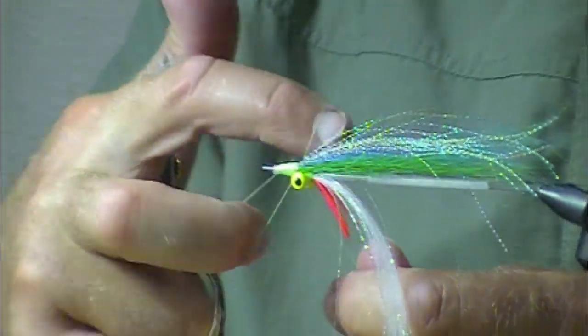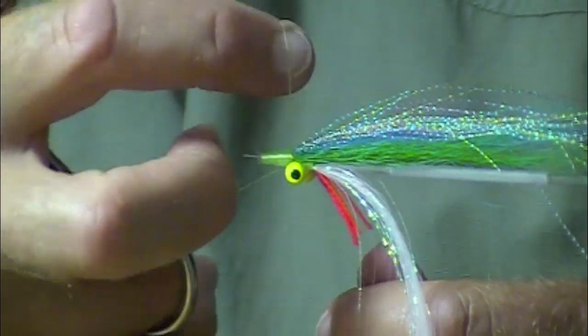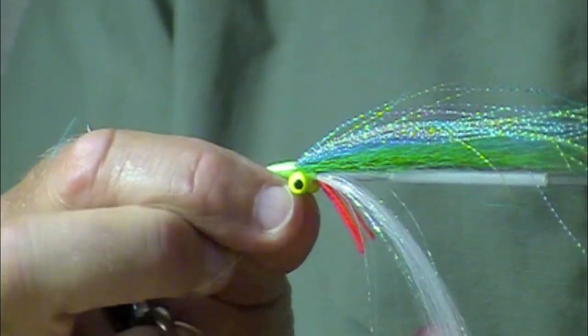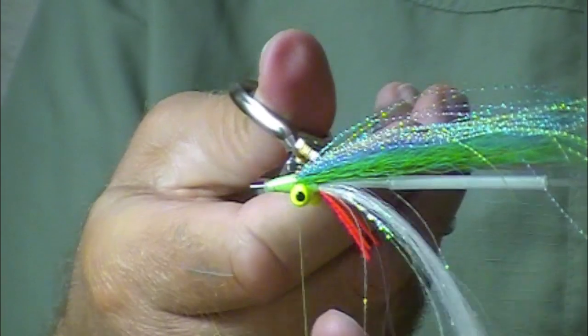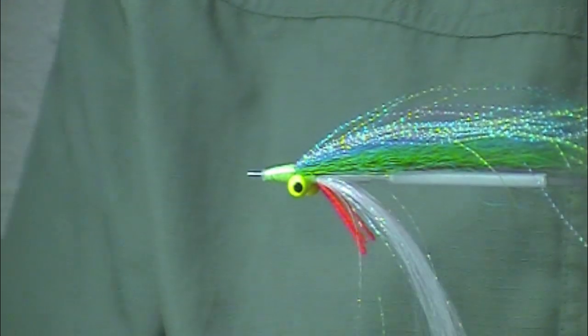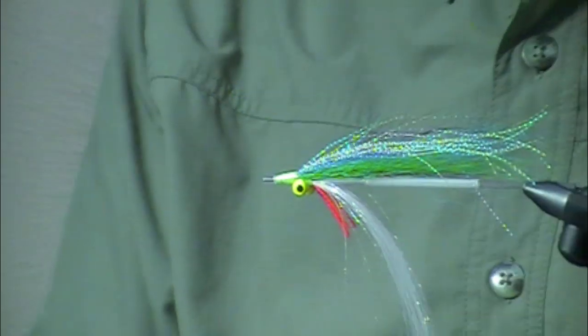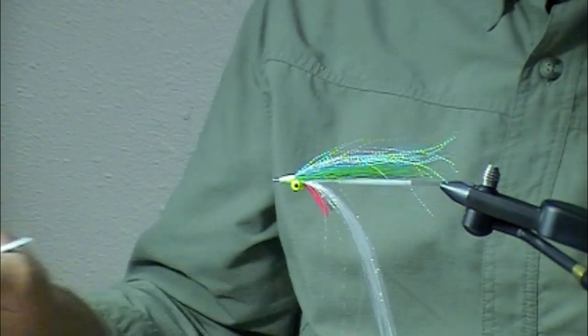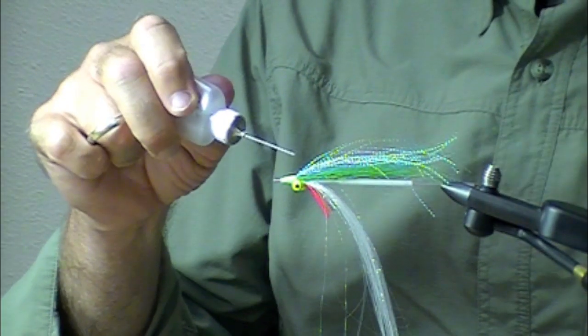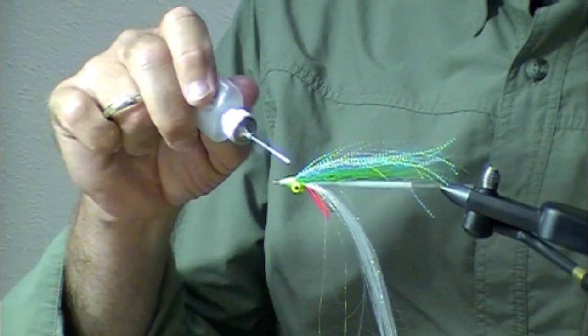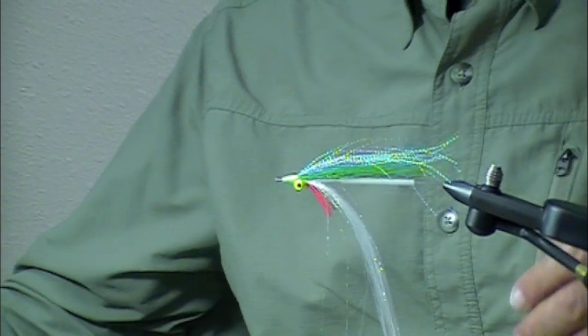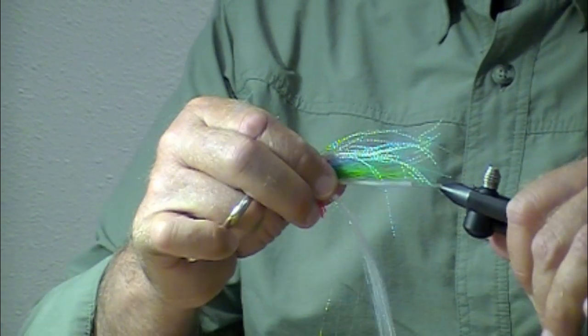Now why am I putting several whip finishes? Because I'm probably not going to epoxy that head. You catch a bunch of fish on these flies and they get chewy, so when you have more than one whip finish, it makes the fly quite durable.